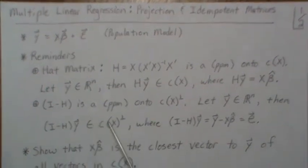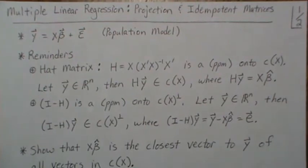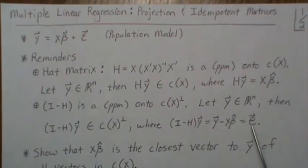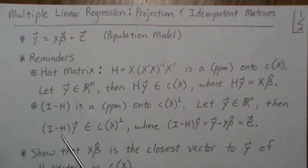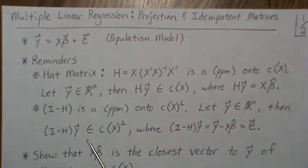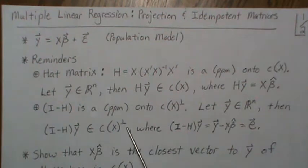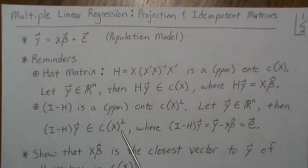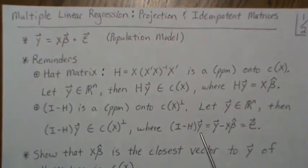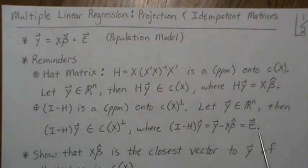Now I minus H is a perpendicular projection matrix onto the orthogonal complement of the column space of X. So if we let Y be any vector in our n-space and pre-multiply it by I minus H, it creates a vector that is perpendicular or orthogonal to the column space of X. And so (I minus H) times Y creates the residual.